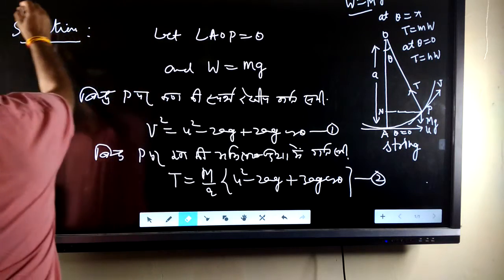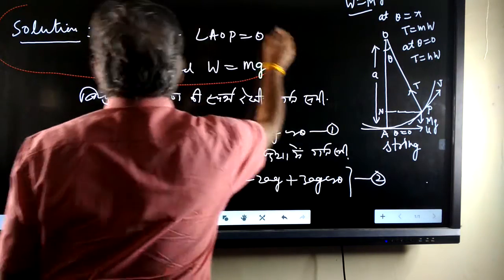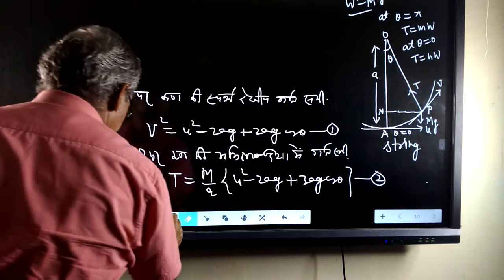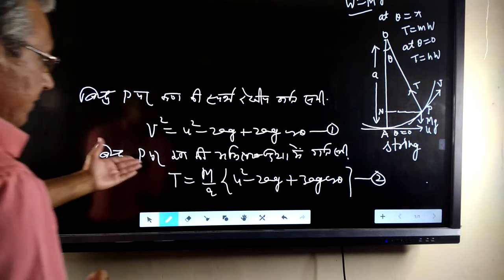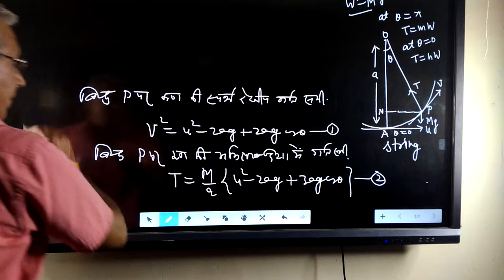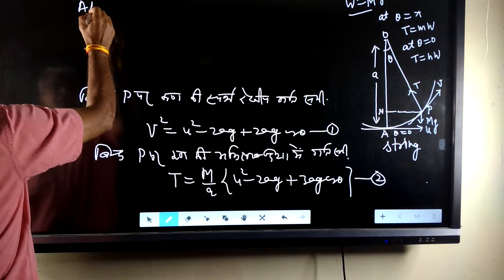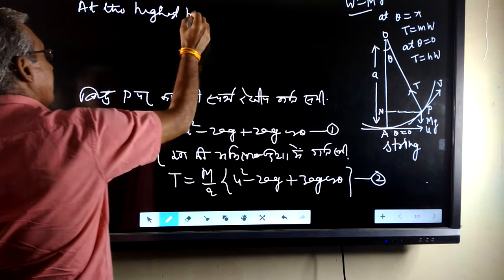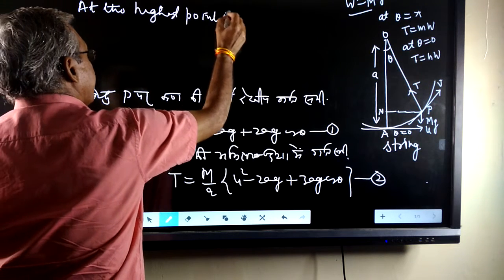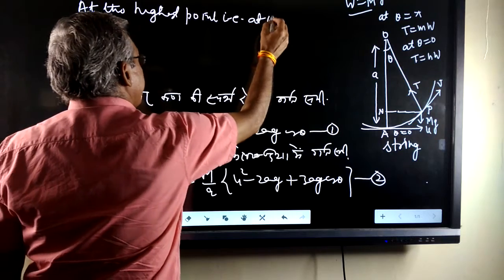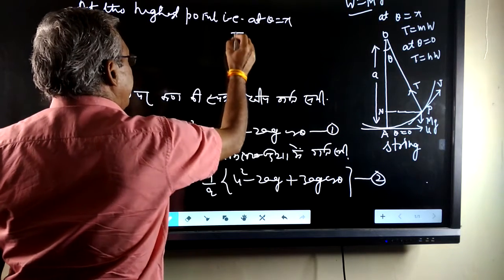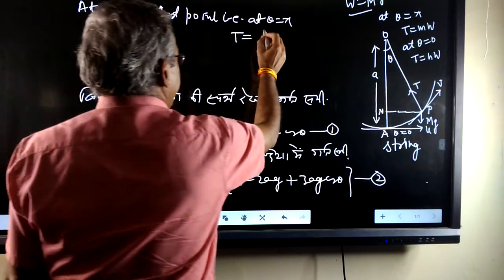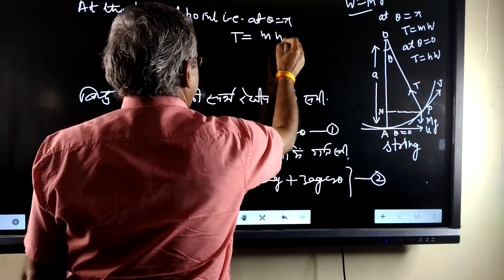Now, in first condition, at the highest point, that is at theta equal to pi, T is mw.